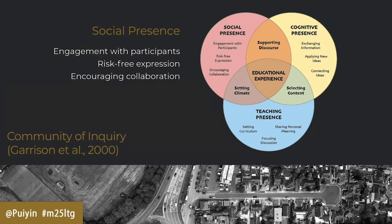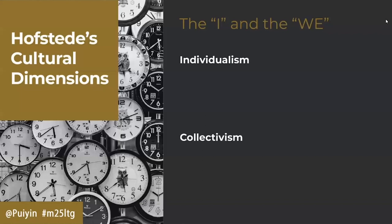The social presence includes things like engagement with each other between students, building a safe environment for students to be able to express themselves freely. For me, a community is about encouraging students to develop their critical voice and collaboration as well, which is something we do very well in design disciplines. And the intercultural aspect — because this is not just about student community, it is specifically about intercultural community.